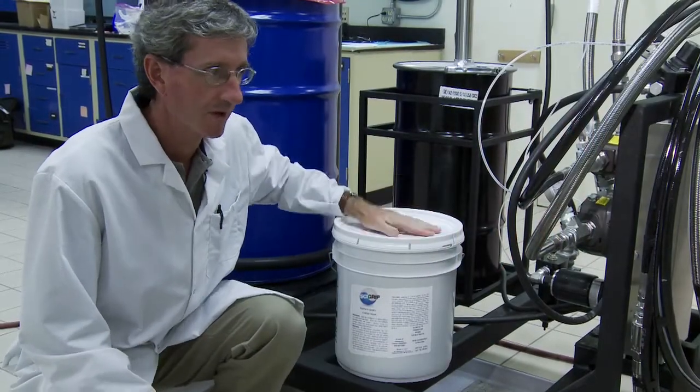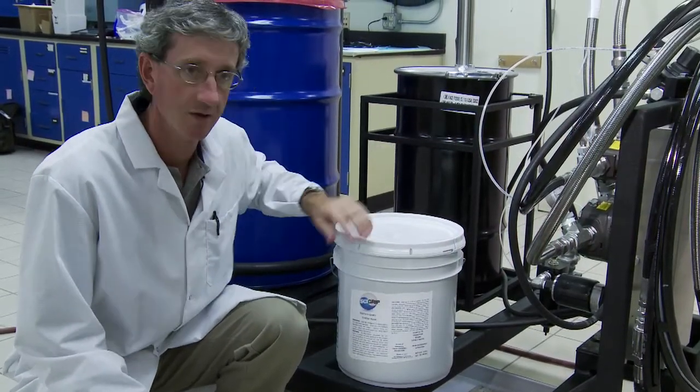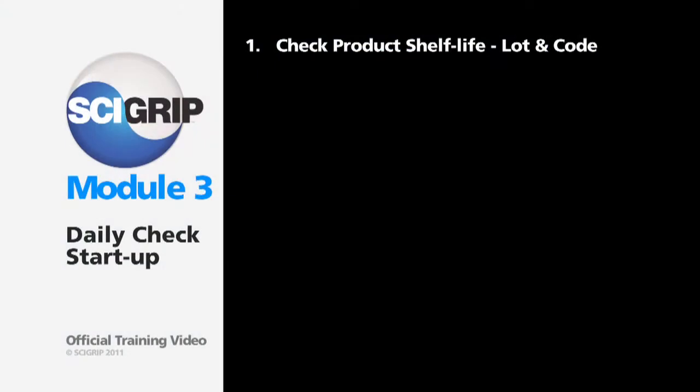The activator will come either in a pail or a pony drum and the label is the same. You'll simply check that you have the correct material and decode the lot number that's the same as the code on the adhesive drum.